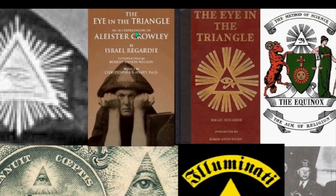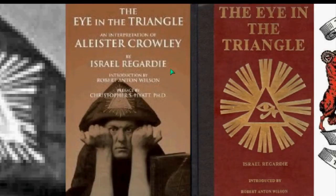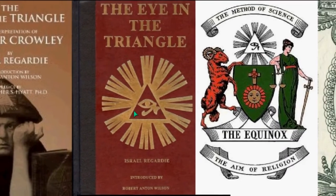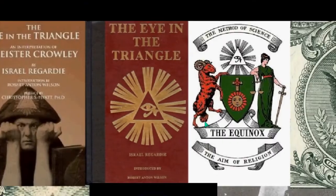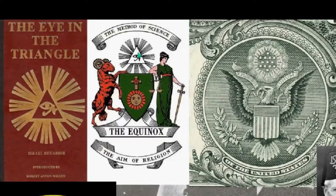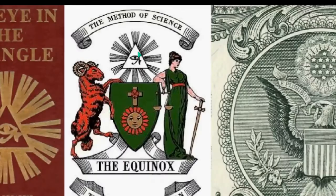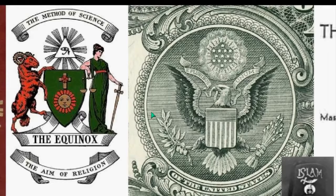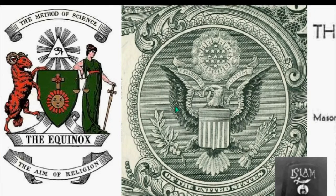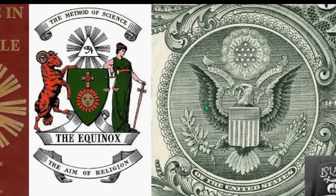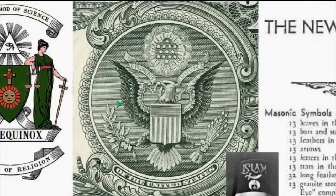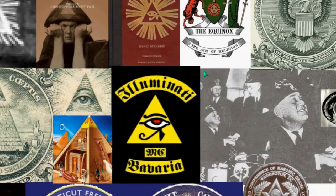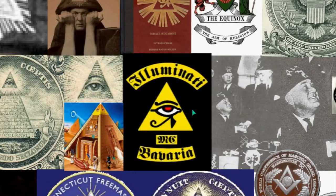You can see here the eye in the triangle — Aleister Crowley has the eye in the triangle as well. Again, you can see the Egyptian pyramid. You can see the reverence for science. I know it sounds like a good thing, but their science is in a different category. Many scientists are into the occult, and you'll see that a little bit later.